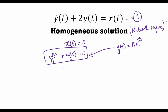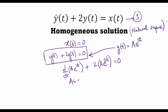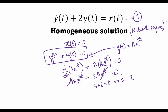Substituting A·e^(st) into the equation, we get d/dt of A·e^(st) plus two times A·e^(st) equals zero. Taking the derivative gives A·s·e^(st) plus two·A·e^(st) equals zero. The factor A·e^(st) cancels from the whole equation, leaving s plus two equals zero, which gives s equals minus two. Therefore the homogeneous solution is y_h of t equals A·e^(−2t).